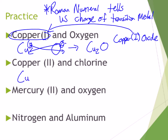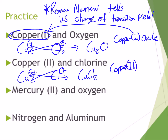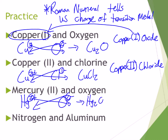Copper(II): Cu is 2+. Chlorine is 1−. Crisscross gives CuCl2; the name is copper(II) chloride. Keep the same ion name you started with — Roman numerals indicate charge, not subscripts. Mercury(II) is 2+, oxygen is 2−. Crisscrossing gives Hg2O2, but a 2+ and 2− cancel each other out, so we reduce to the lowest whole number ratio: HgO. The name is mercury(II) oxide.